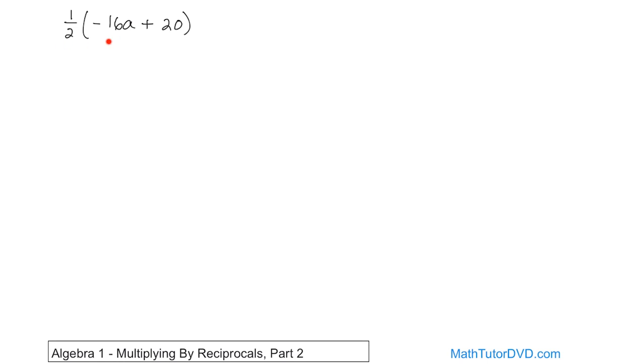What is 1 half times negative 16a? Well, it is a positive times a negative, so we now know, since we've done that kind of work, that that's going to give us a negative answer. And then the 1 half times the 16 can be written as 16 over 2 times a.